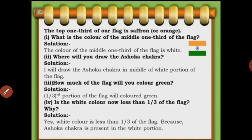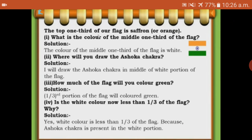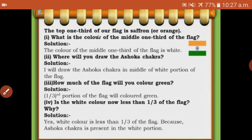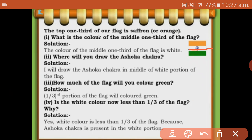The top one-third of our flag is saffron or orange. What is the color of the middle one-third? What does one-third mean? How many parts are there? 3 parts. If we are talking about saffron color, there is only one saffron part. So it is 1 by 3. In the denominator, you will write the total number of parts. In the numerator, you will write the number of parts you need. So what is the color of the middle one-third of the flag? White color. What is the answer? White.